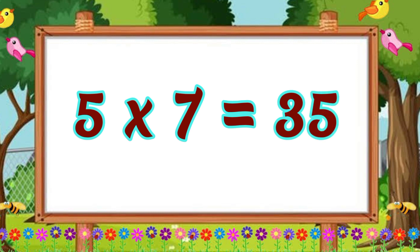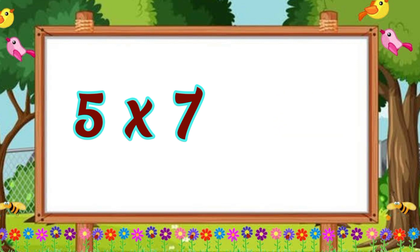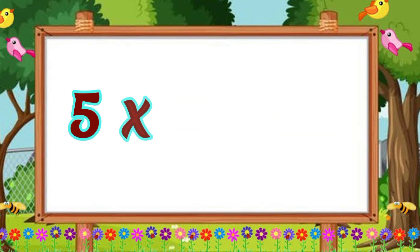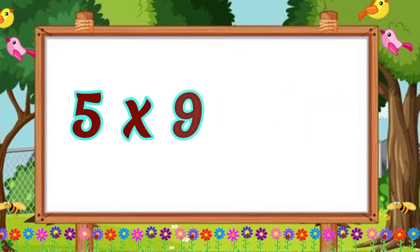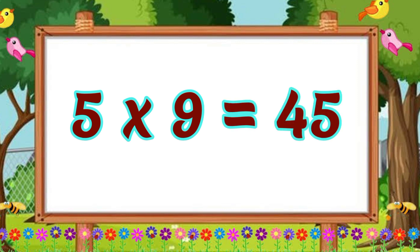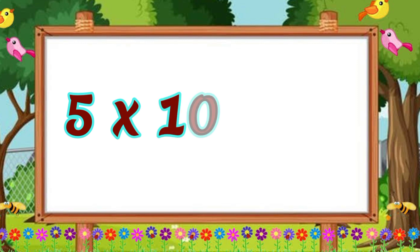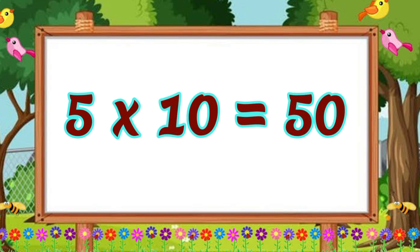Five sevens are thirty-five. Five eights are forty. Five nines are forty-five. Five nines are forty-five. Five tens are fifty. Five tens are fifty.